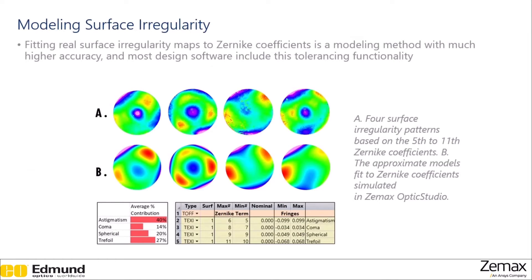Fitting real surface irregularity maps to Czernicke coefficients is a modeling method with much higher accuracy, and most design softwares include this tolerancing functionality. In this graphic, we have four surface irregularity maps and the fitting of these maps to Czernicke coefficients. With this, we can see what types of aberrations are being produced in the system due to the surface irregularities.